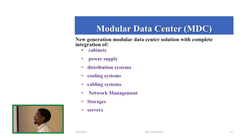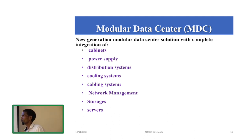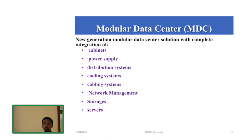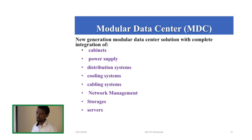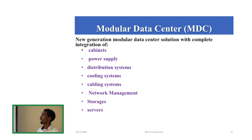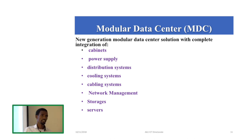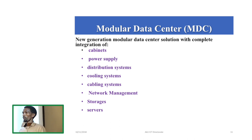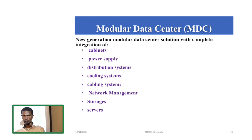We expect the modular data center to include power systems, distribution systems, cooling systems, network management, and storage and servers. Once deployed, this modular data center will ensure the security of data in our campus, solve power system problems in our current data center, and provide storage access for instructors as well as for students.